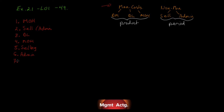Number seven: salary paid to the production manager who supervises the manufacturing for all products. It says 'production' and 'manufacturing' twice, so it's a manufacturing cost — three choices: direct material, direct labor, or manufacturing overhead. Is the salary a direct material? No. Is it direct labor? The question is: can you trace it to a specific product or job? The supervisor oversees many people and doesn't directly touch the production line. So it is labor, but it's indirect labor — manufacturing overhead.